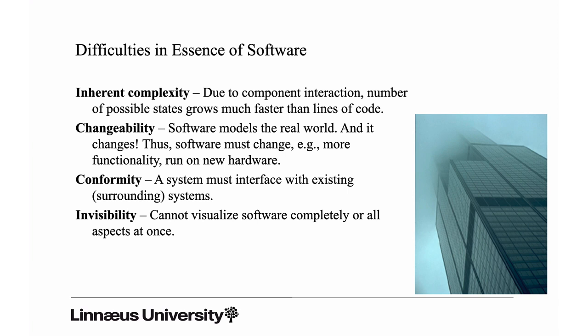The second challenge is changeability. Software is often a model of the real world, and as the world changes, our software systems must also change — we have to add more functionality and ensure the software runs on new hardware, etc. This changeability creates many problems because you have to think about change throughout the entire development. Third is conformity: the software systems we develop are parts of larger system architectures, and the software must conform to interfaces defined by the surrounding systems.